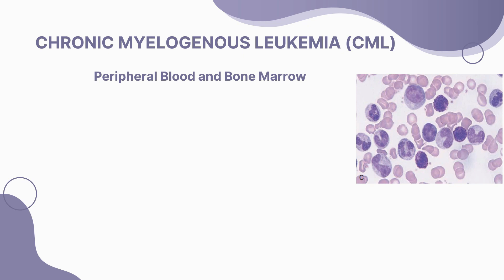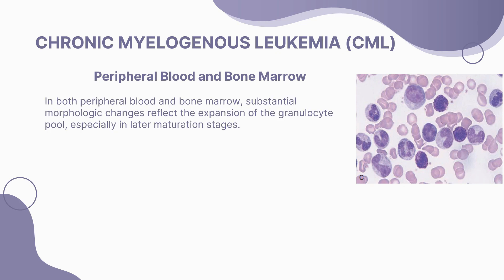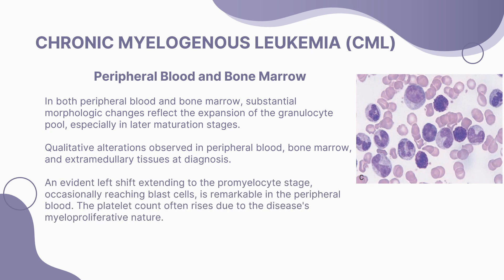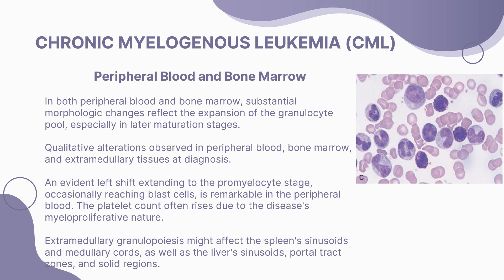In both peripheral blood and bone marrow, significant morphologic changes reflect the expansion of the granulocyte pool, especially in later maturation stages. Qualitative alterations are observed in peripheral blood, bone marrow, and extramedullary tissues at diagnosis. An evident left shift extending to the promyelocyte stage, sometimes reaching blast cells, is remarkable in the peripheral blood. The platelet count often rises due to the myeloproliferative nature, and extramedullary granulopoiesis might affect the spleen's and liver's sinusoids.